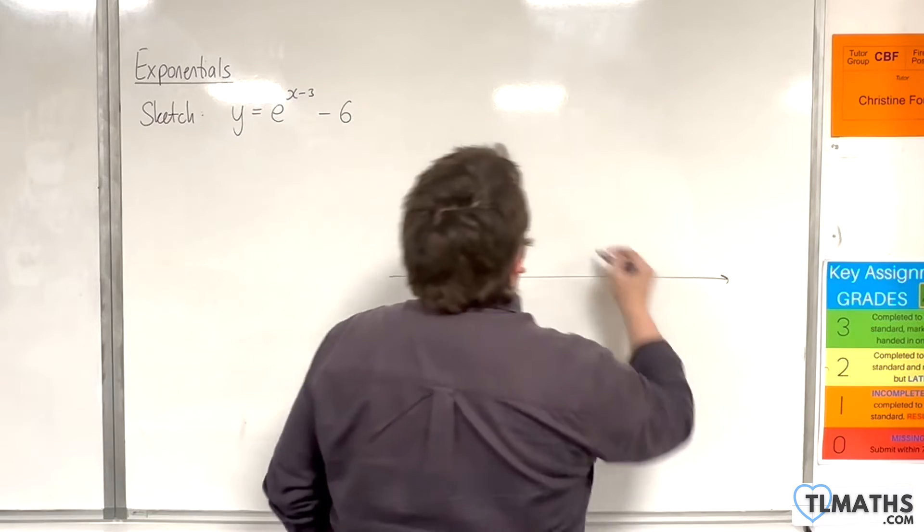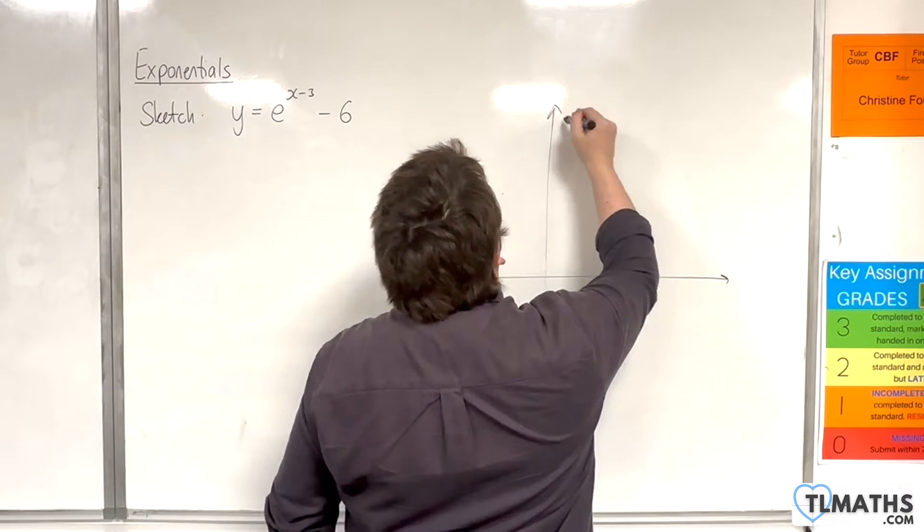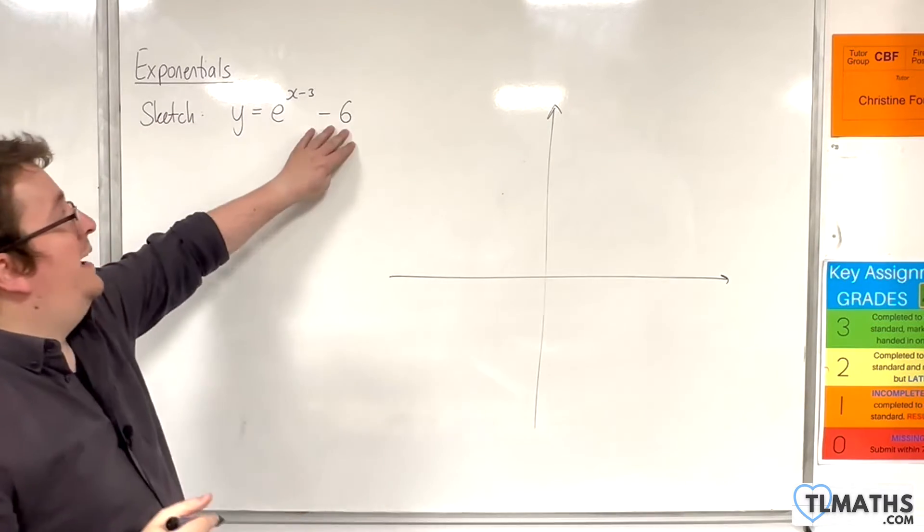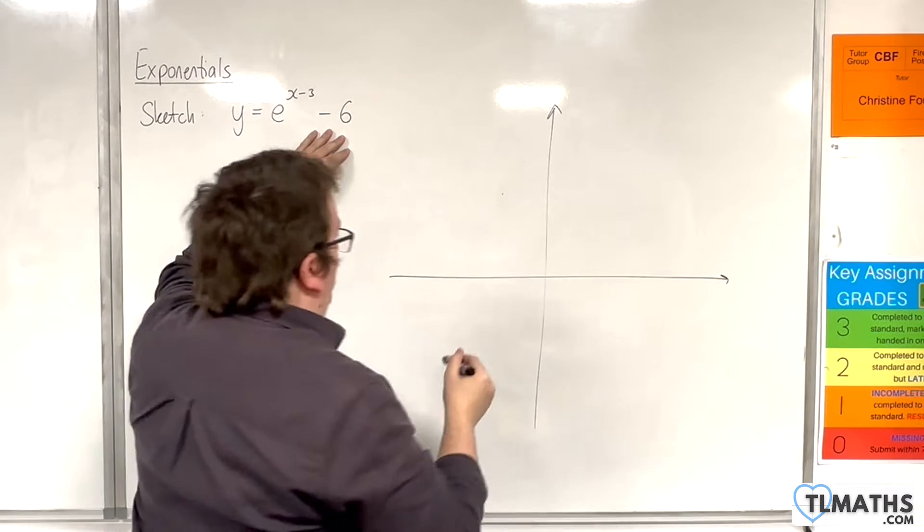So, let's draw on some axes. And we should identify first that there will be a horizontal asymptote of y equals minus 6.